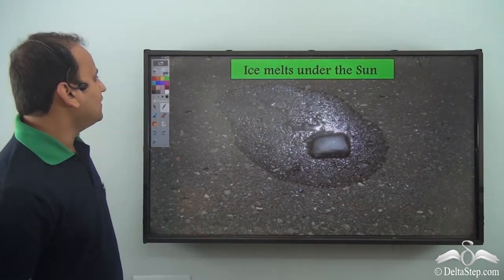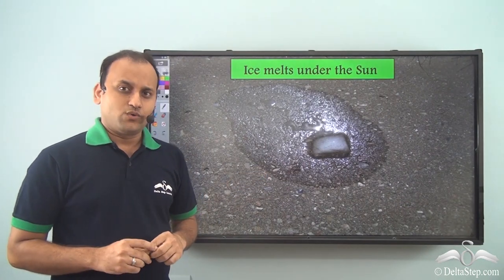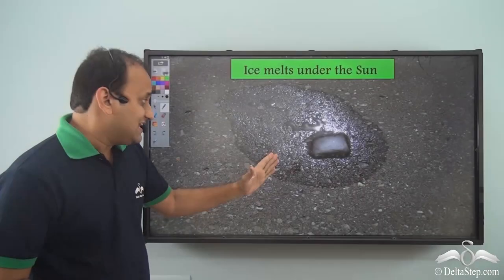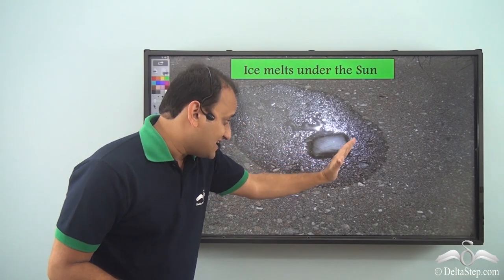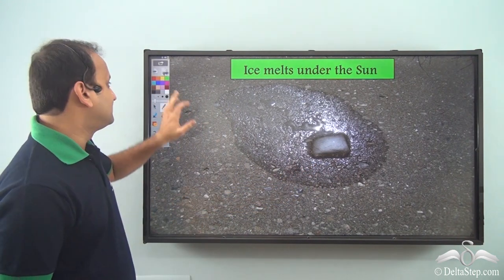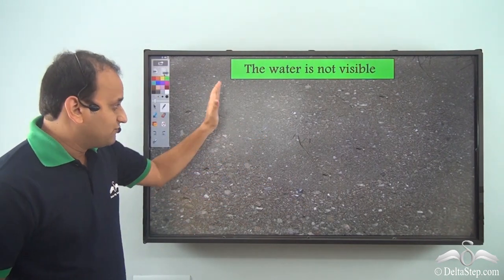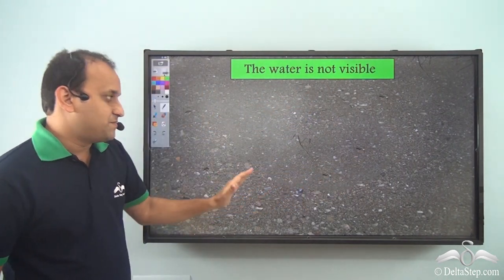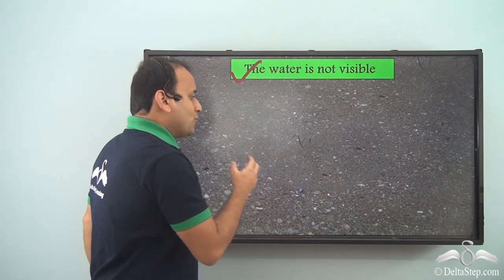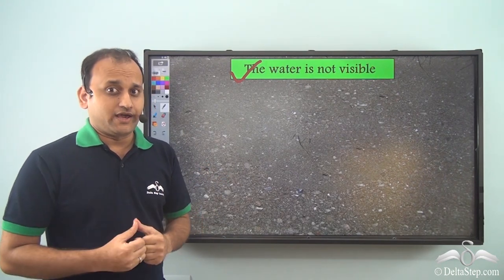Now what if you allow the ice to melt under the sun? What exactly will happen? Well, after some time you will see that the entire ice has melted into water, and after some more time, the water will disappear completely — it is no more visible. So water again changed and mixed with air.